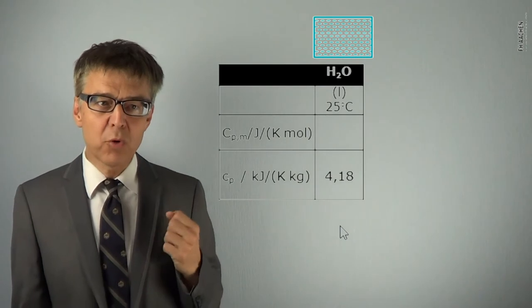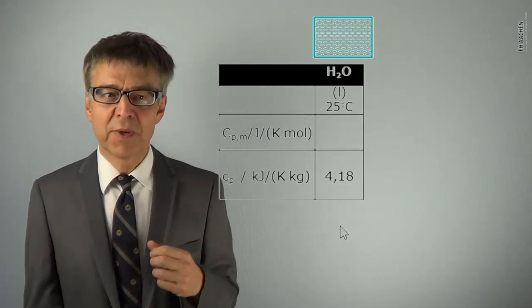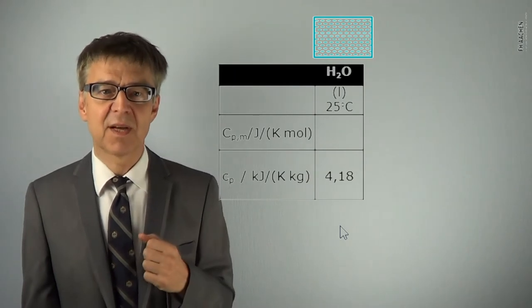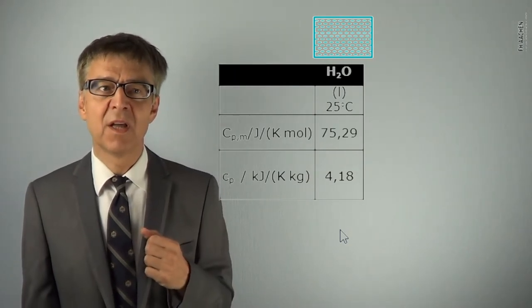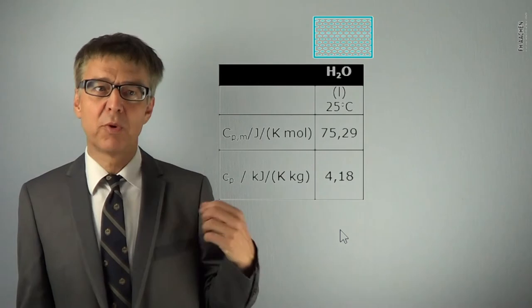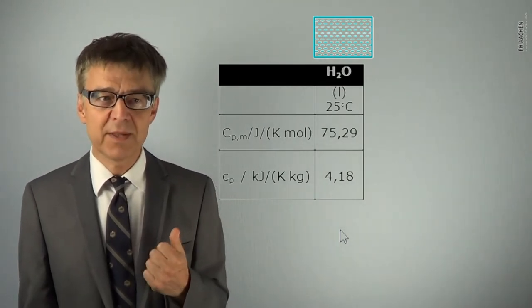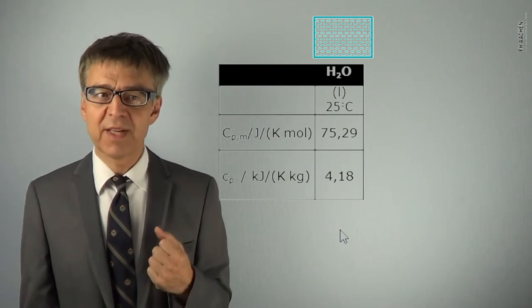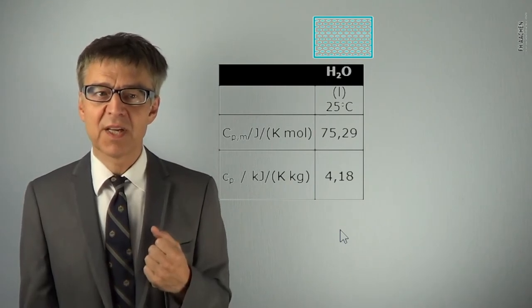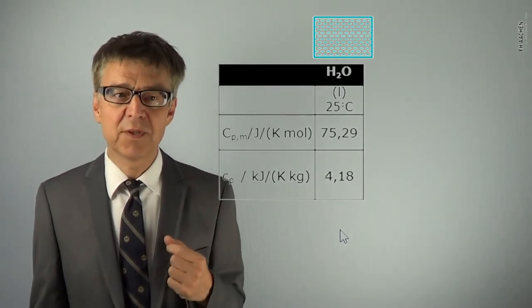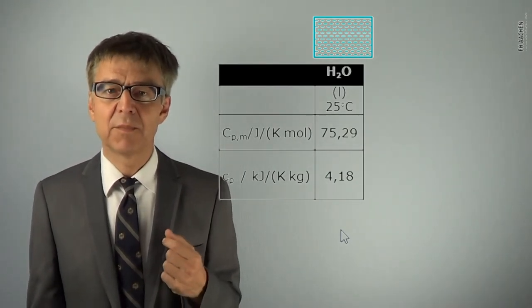If you prefer moles to kilograms, you will be interested in the molar heat capacity, capital C sub PM. Converting specific to molar quantities, you merely have to multiply by the molar weight. 4.18 times 18 ends up with 75.29 J per Kelvin and mole.